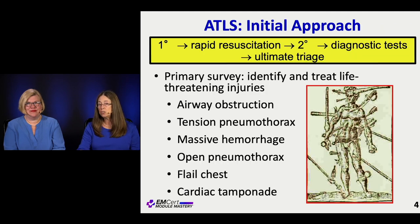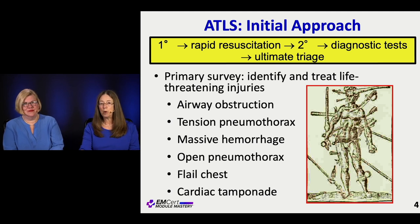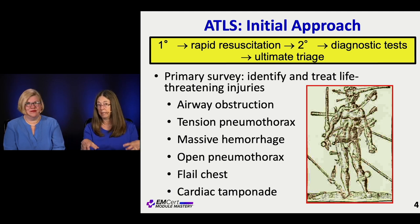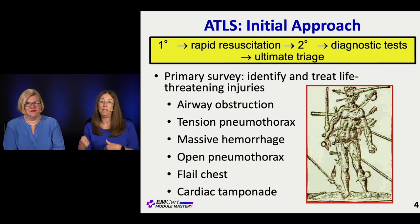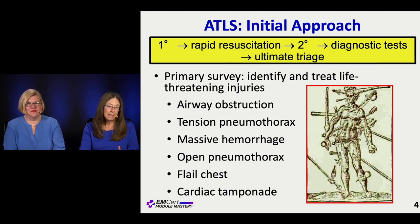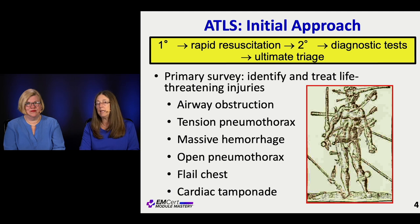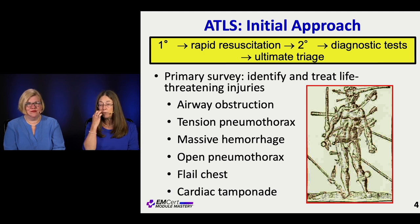In that very first layer of the initial approach, what we really want to do is identify something we can fix right now that will change saving somebody's life. The things we're going to identify with the A, B, C, D, E primary survey are: airway obstruction, tension pneumothorax, massive hemorrhage — especially external — open pneumothorax, flail chest, and cardiac tamponade. Those are the things we could intervene on right now to buy time to further evaluate the patient or get them to the OR.